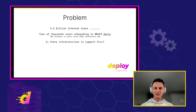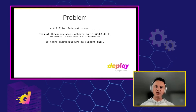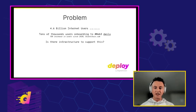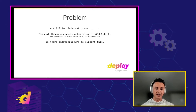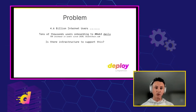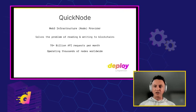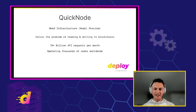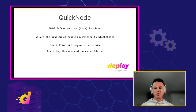The problem we're faced with in this next iteration of the internet is that there are 4.6 billion internet users today, and tens of thousands of these users are trying to use Web3 on a daily basis — a 70% increase in users since 2020. Is there infrastructure to support this? This is a problem we identified back in 2018. We come from 20 years of experience building data centers and managing thousands of servers. This is where we started QuickNode.